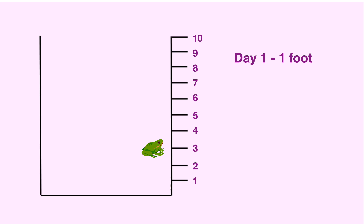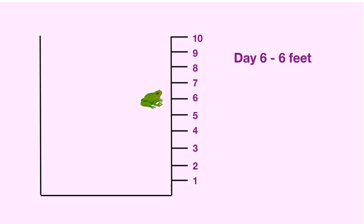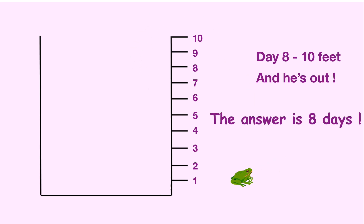So the first day he goes up 3 feet and down 2, and he's at 1. The next day he'll go up 3 feet and down 2, and he's at 2. Now let's fast forward. So at day 6, he's at 6 feet. The next day he goes up to 9, and down to 7. He's at 7. Then finally on day 8, he goes from 7 to 10, and he's out of the well. So it will only take him 8 days to escape the well. And that's our answer.